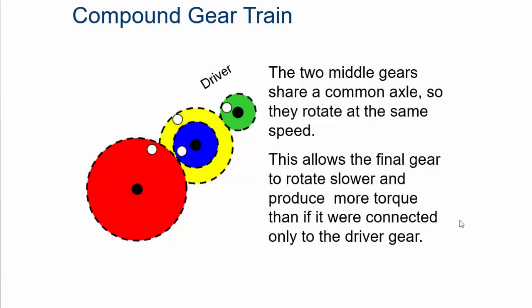Now a compound gear train is a little bit different. Here's an example of a compound gear train. You have this one in the middle, this is the driver gear driving the yellow gear, and then the yellow and blue one are on the same shaft, and then this blue one goes to the red gear at the end. This allows the final gear to rotate slower. That multiplies the amount of torque or the gear ratio that you're going to end up having if you have one in the middle on the same shaft.